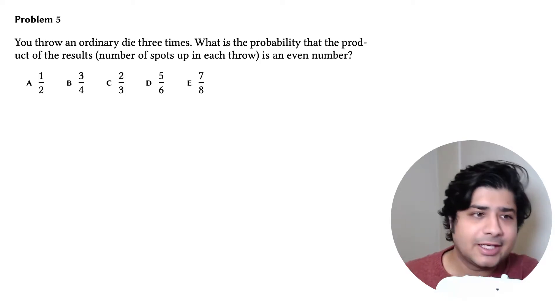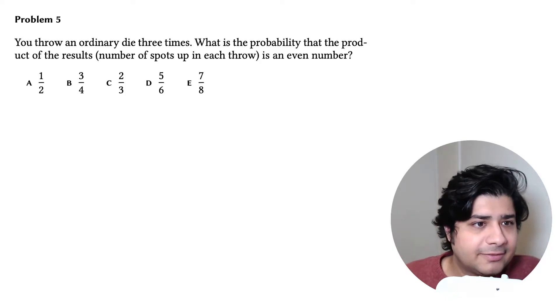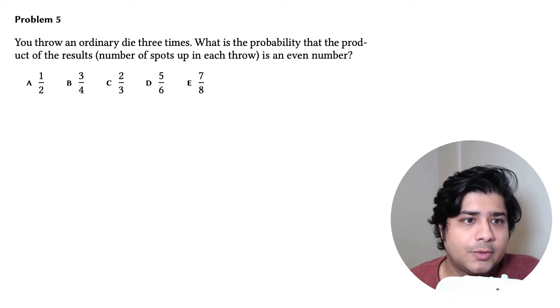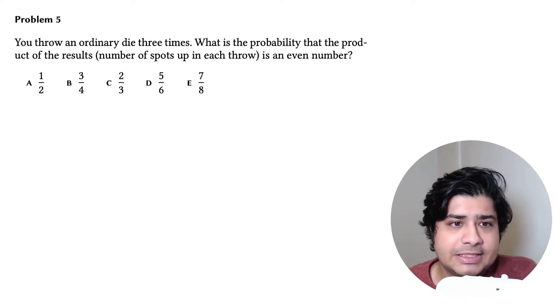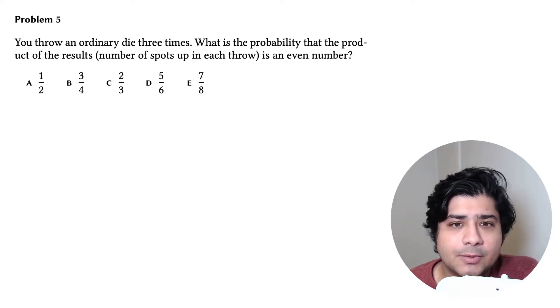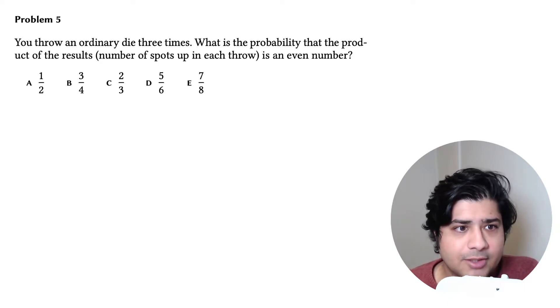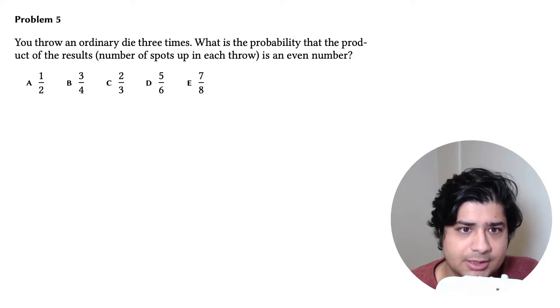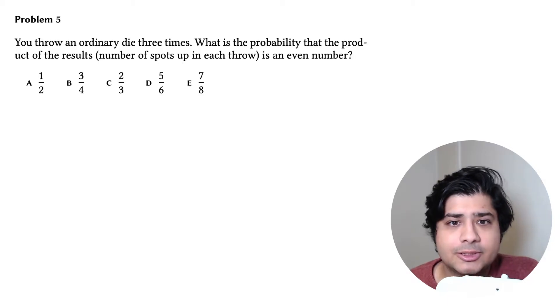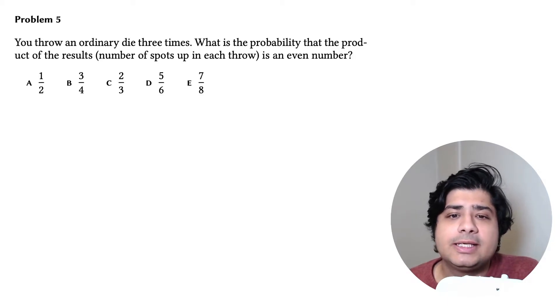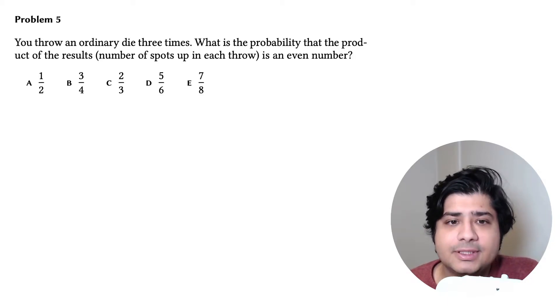Let's have a look at problem five. You throw an ordinary die three times. What is the probability that the product of the results — the number of spots up in each throw — is an even number?